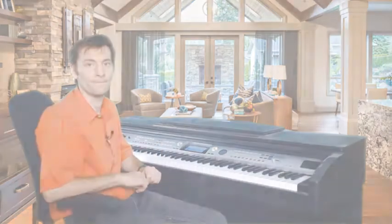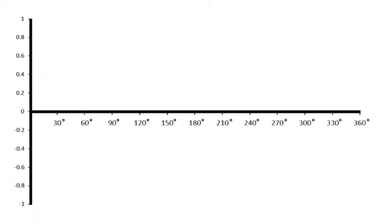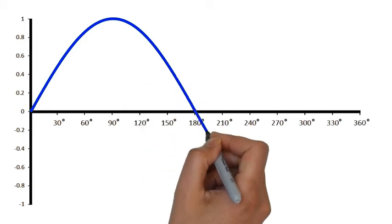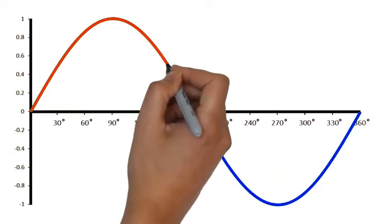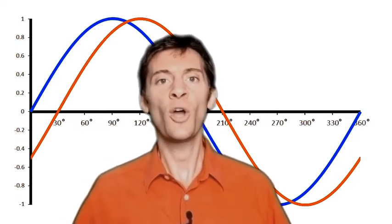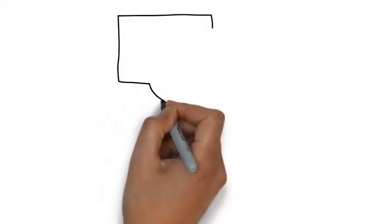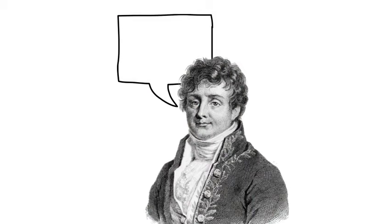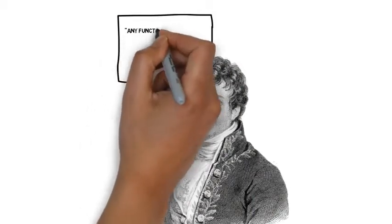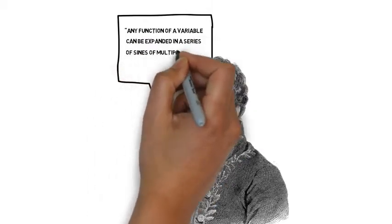So how do we represent this shift in phase mathematically? Let's take two sine waves. We'll draw our first wave in blue, and it has a phase of zero. The other we'll draw in red, but shift it by 30 degrees. Now hang on a second — we've just been talking about changing the phase of a signal by shifting it in time. How come we're suddenly talking about angles? Well, remember what Fourier said about signals in general: he said any function of a variable can be expanded in a series of sines of multiples of the variable.